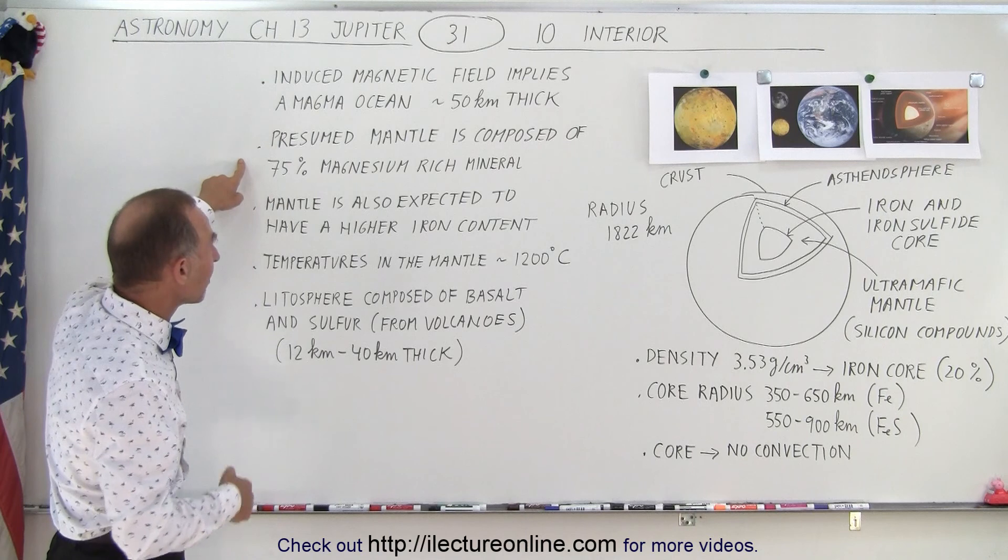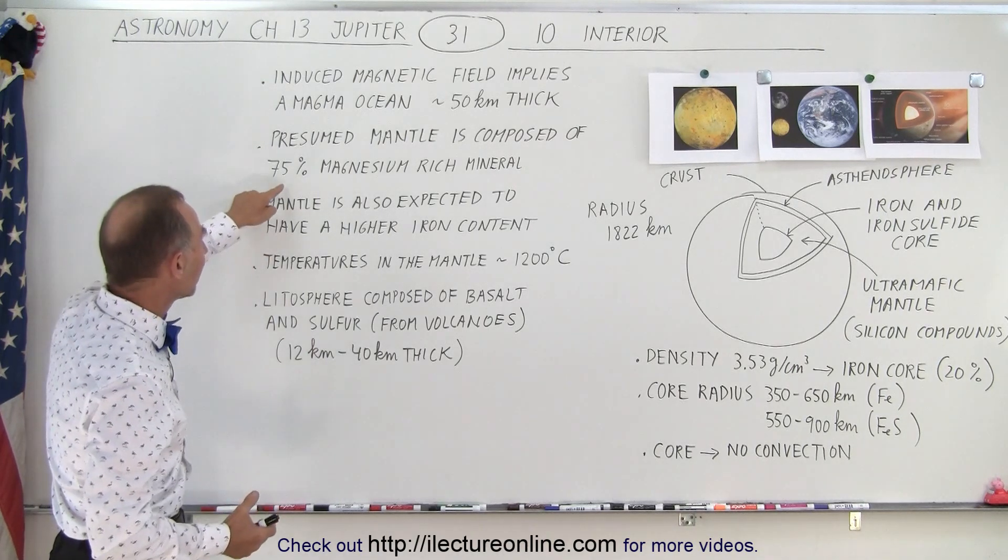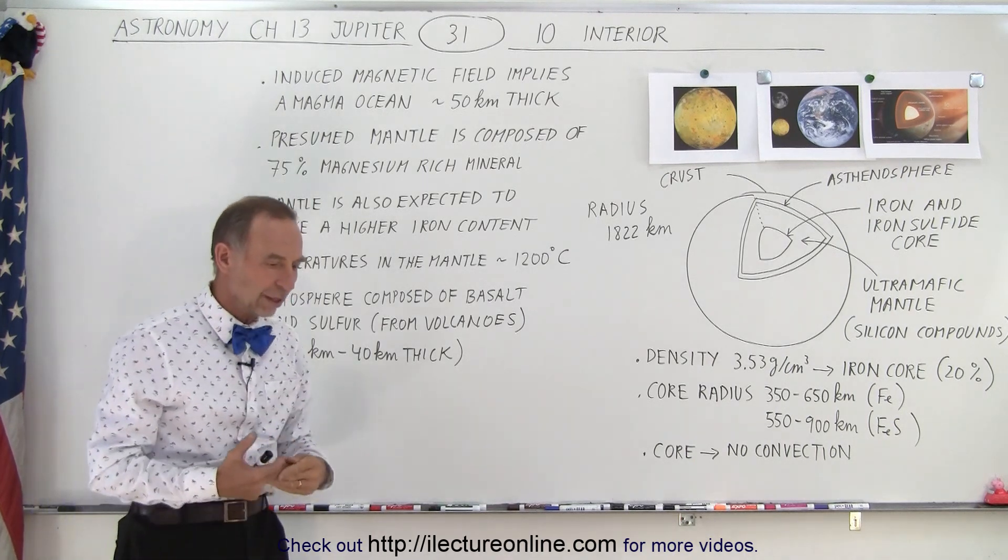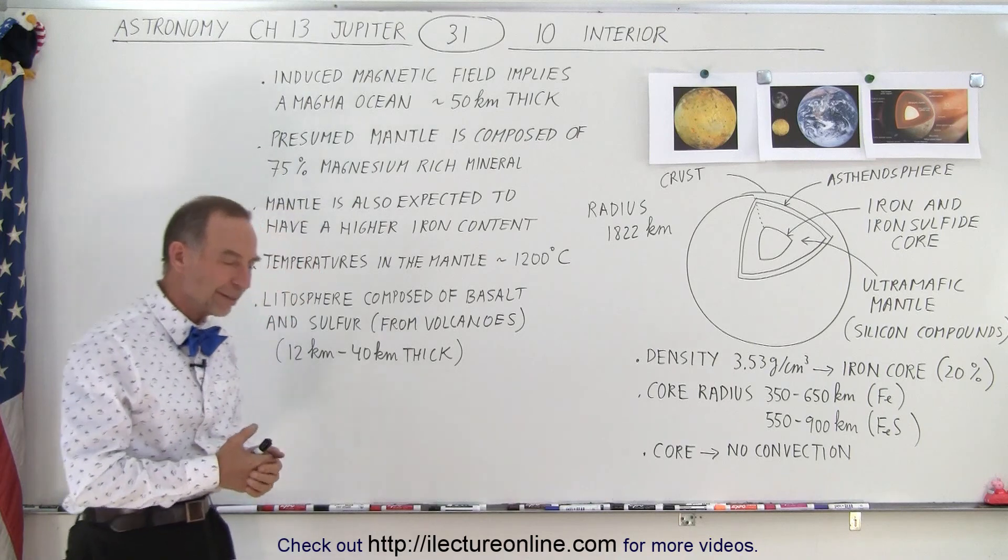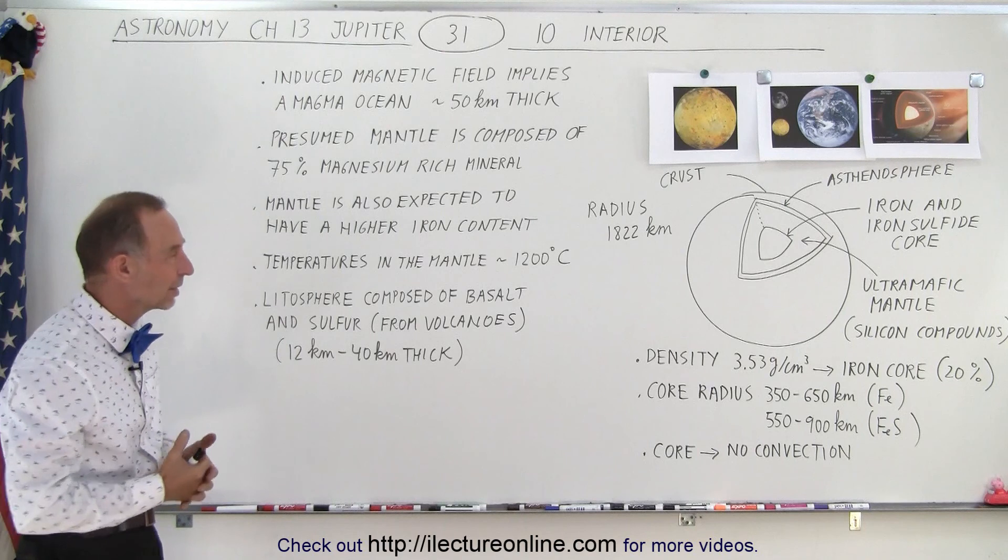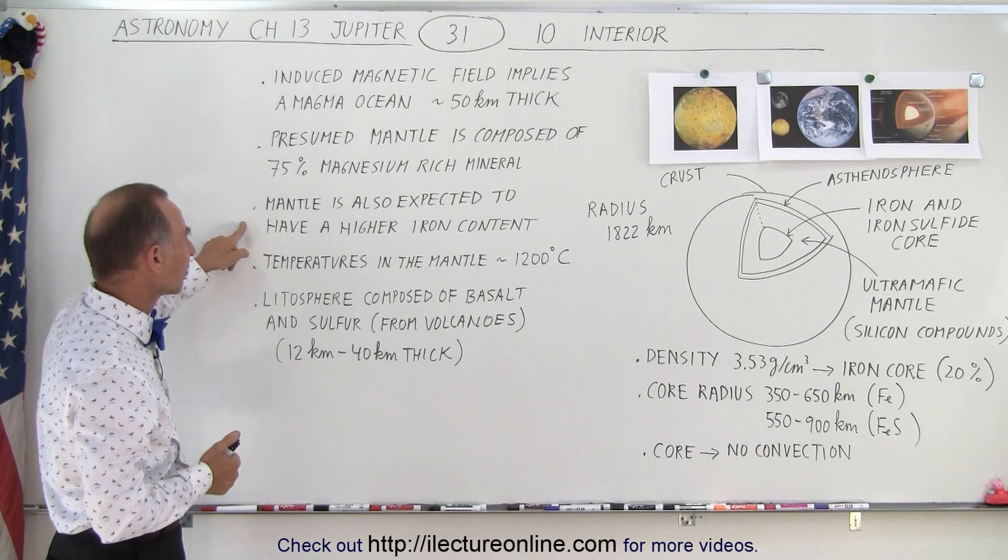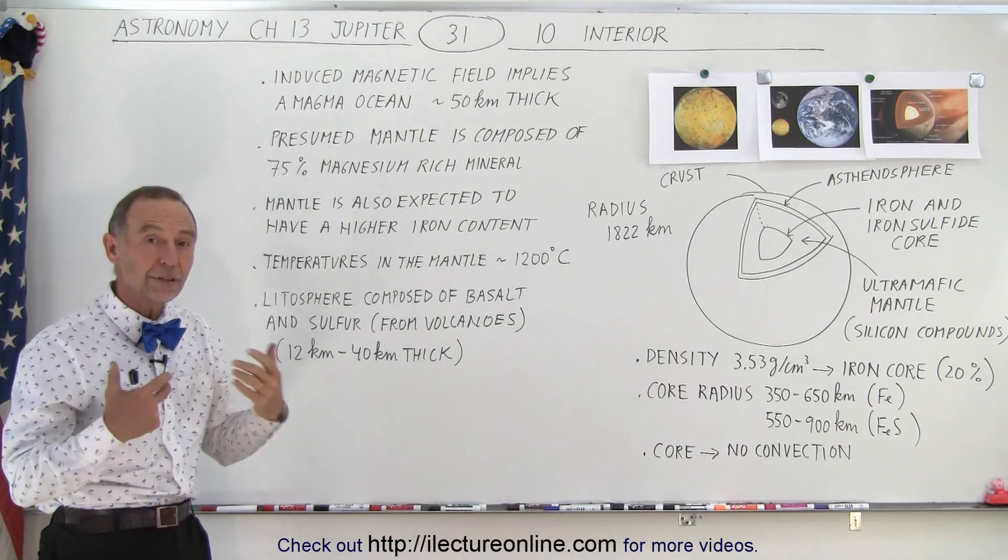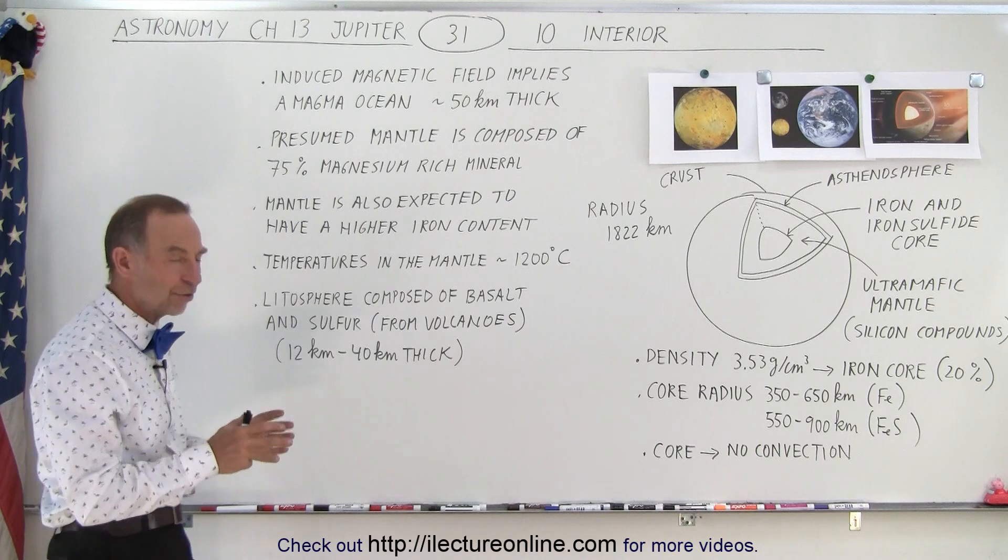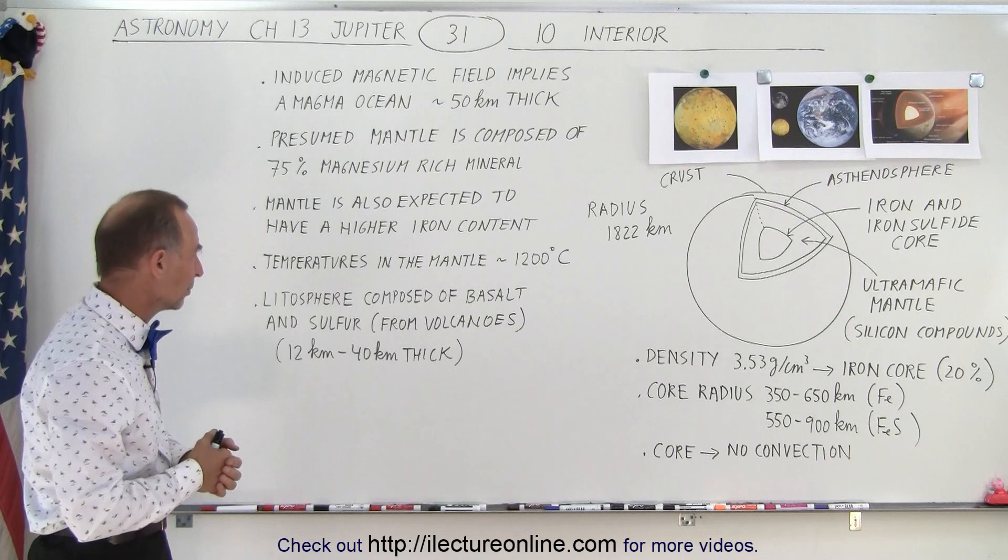We presume that the mantle, which is the biggest part of the interior of Io, is made of about 75% magnesium-rich mineral. Of course, it's primarily a silicon material, but we assume there's a lot of magnesium mixed in with the silicon. We also expect that the mantle has a higher iron content than we would typically see on the Earth or on our Moon. Maybe not as much as Mars, but we believe it's very high, much higher than the Earth and our Moon.